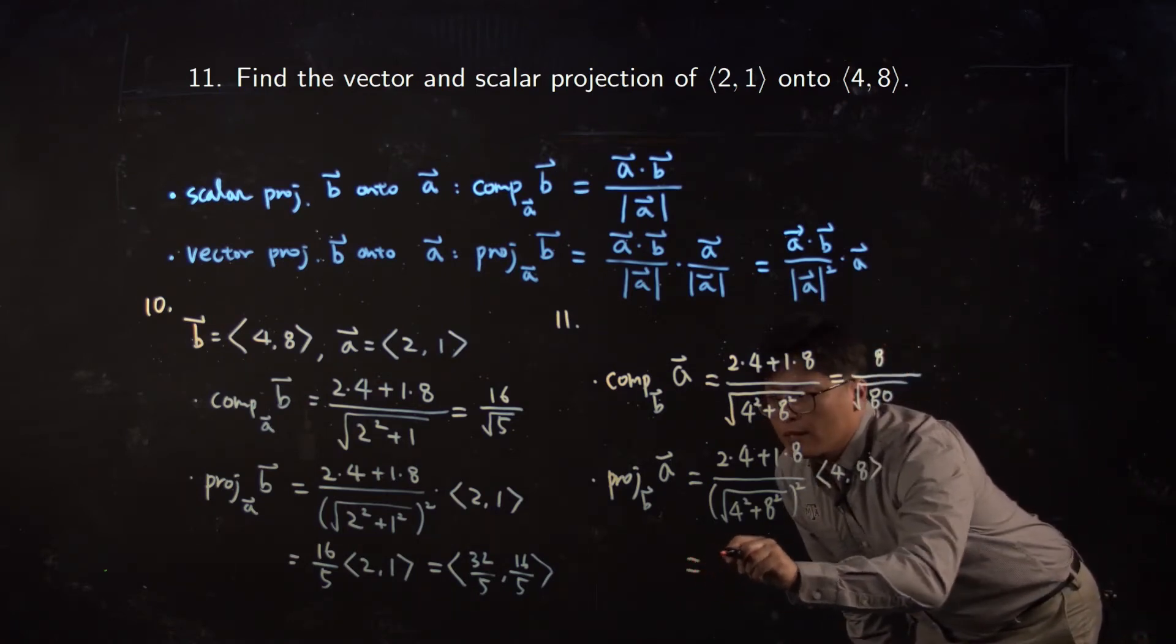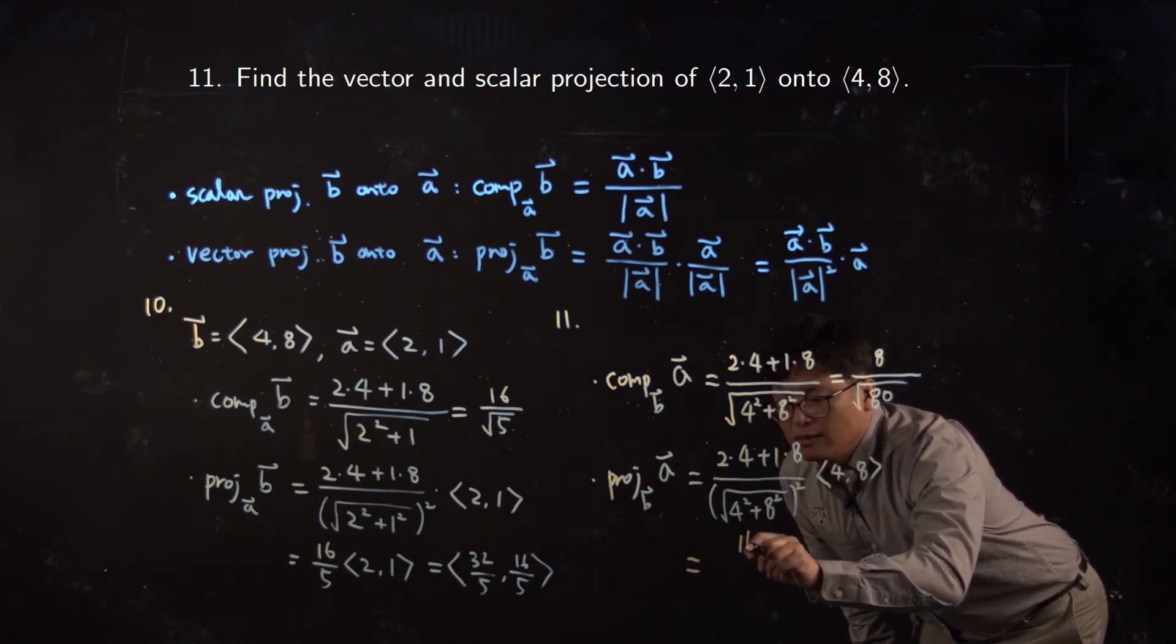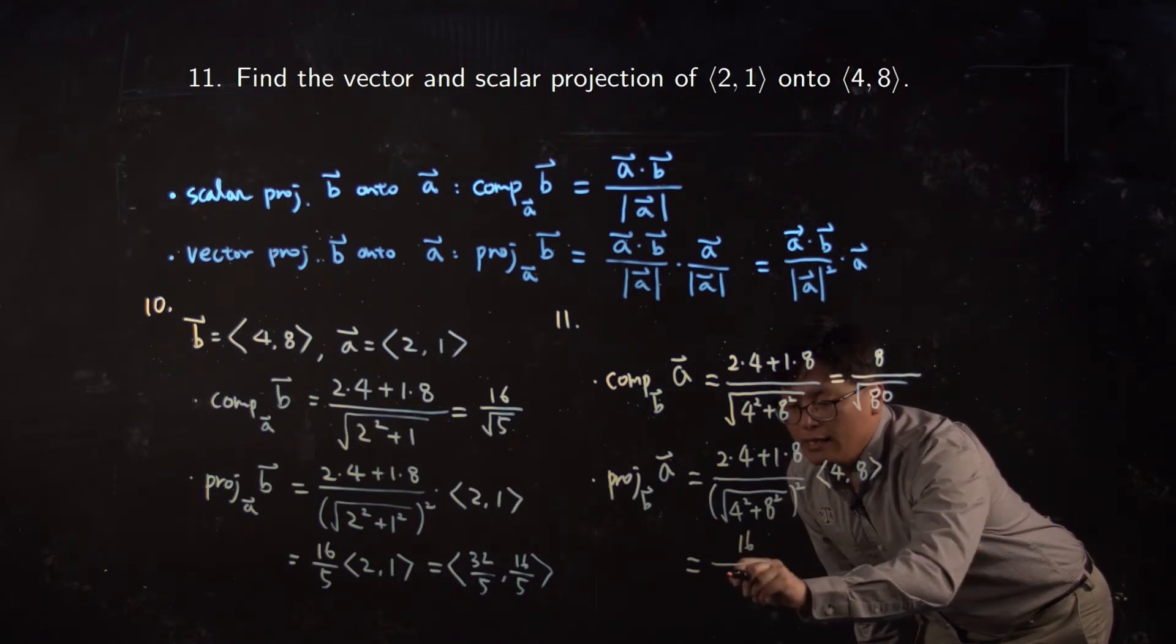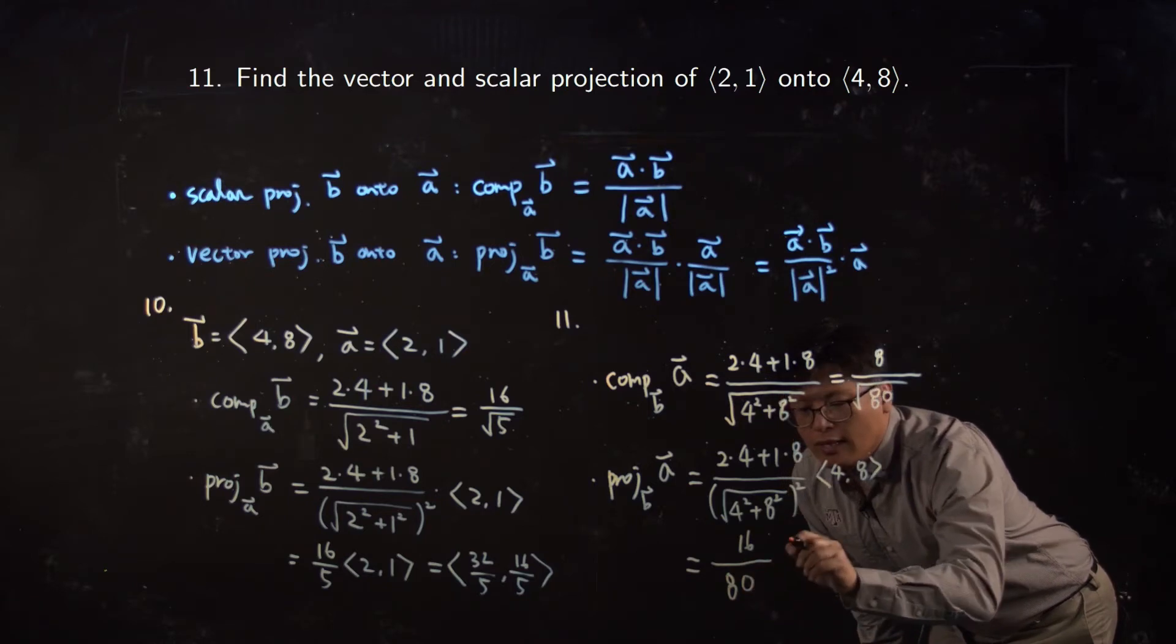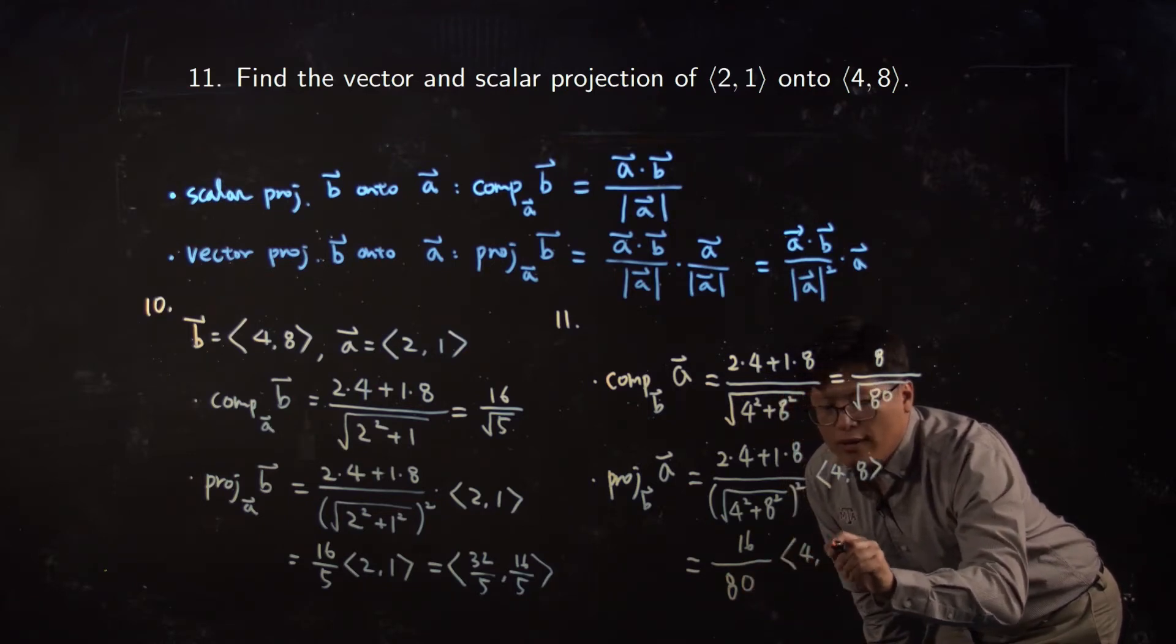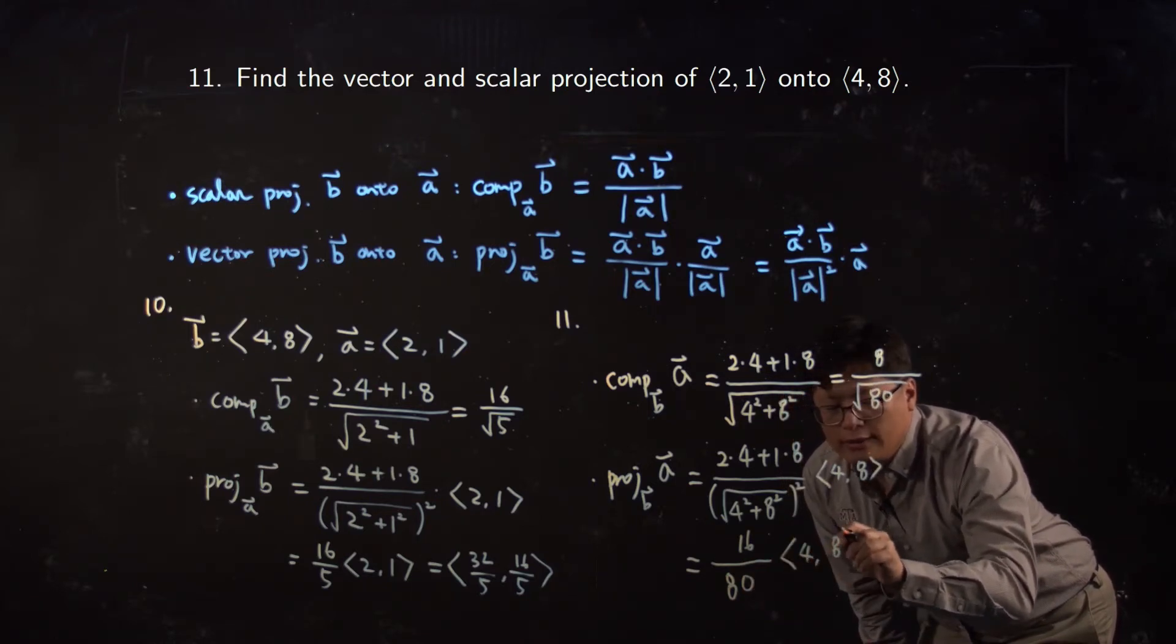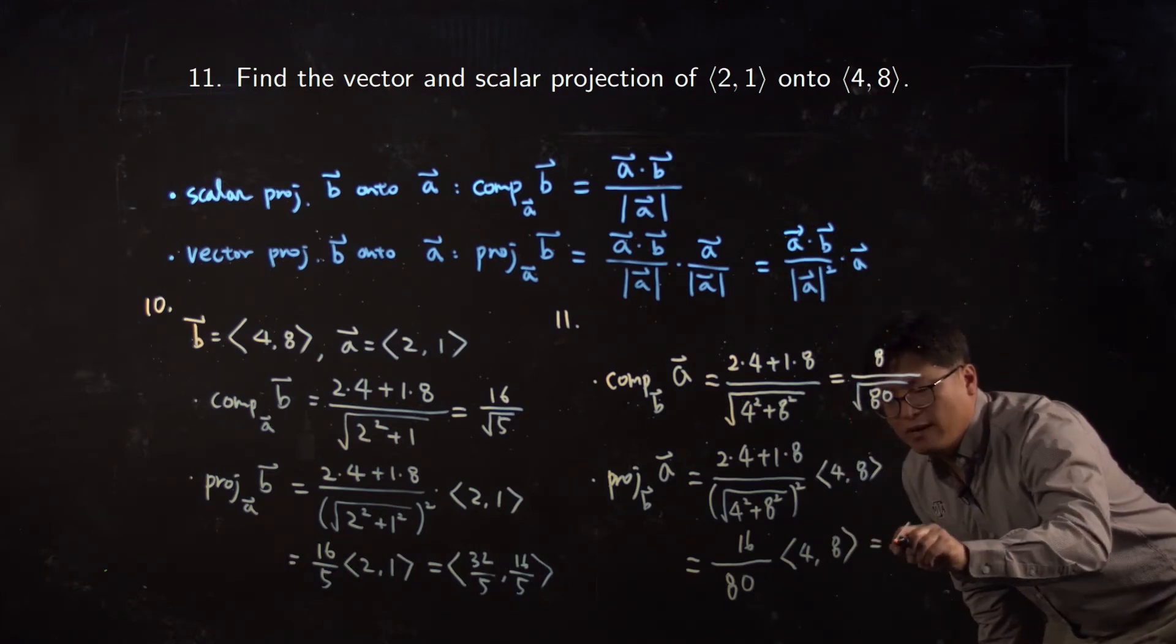16 over 80... square root of 80 squared, which is 80, times the vector 4, 8. So which is equal to, by simplifying...